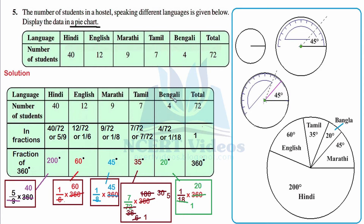For Bengali, 1 over 18 multiplied by 360: cancelling 18 into 360 gives 20, so the sector angle is 20 degrees. Finally, when we add all the sector angles — 200, 60, 45, 35, and 20 — they sum to 360 degrees, confirming our calculations are correct. With this, the first step is complete.